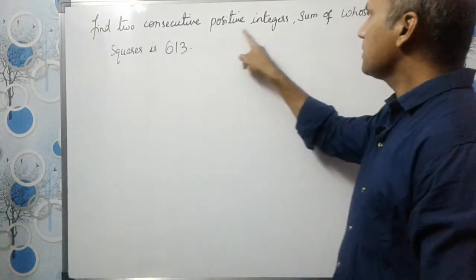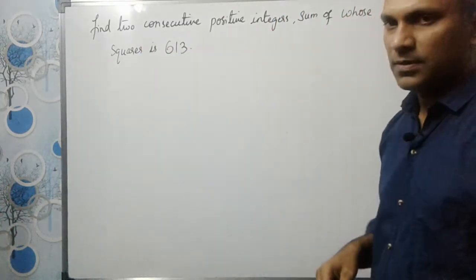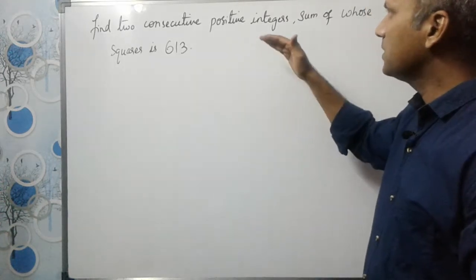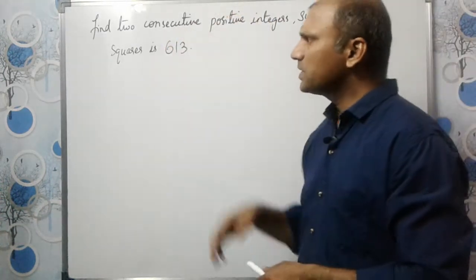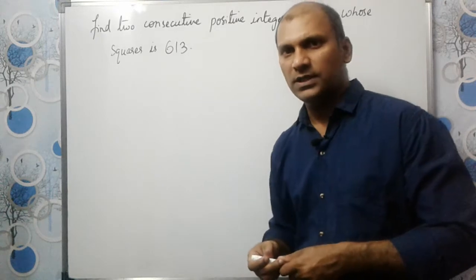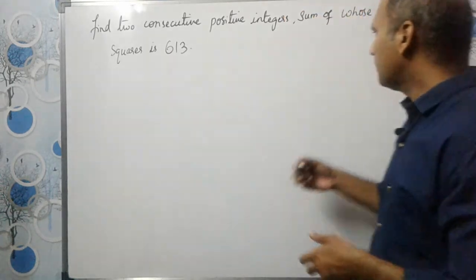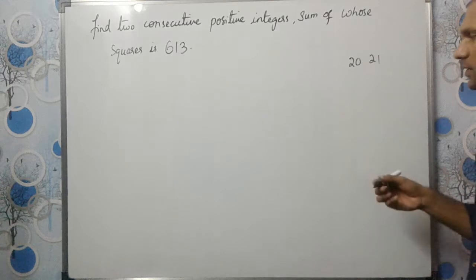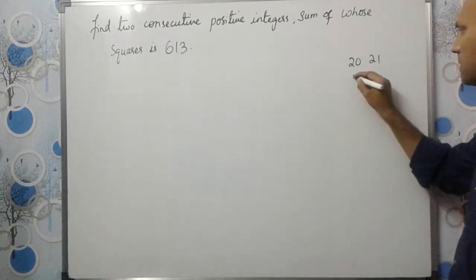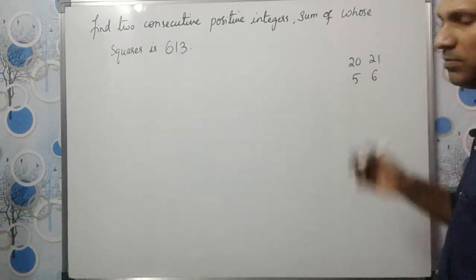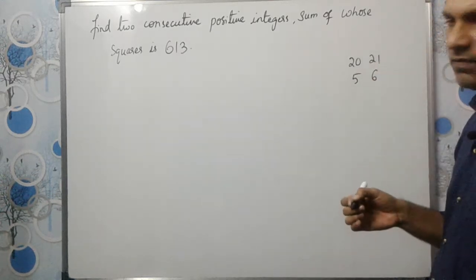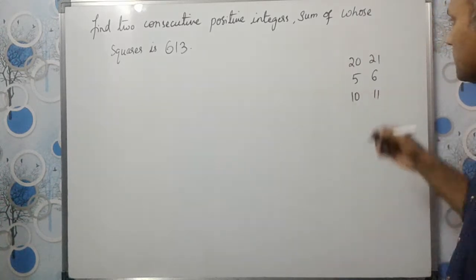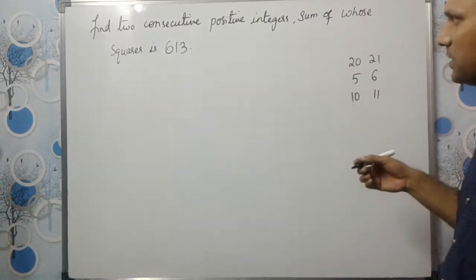We need to find two consecutive positive integers. Consecutive means the numbers which come one after the other — like 20 and 21, or 5 and 6, or 10 and 11. These are consecutive positive integers.